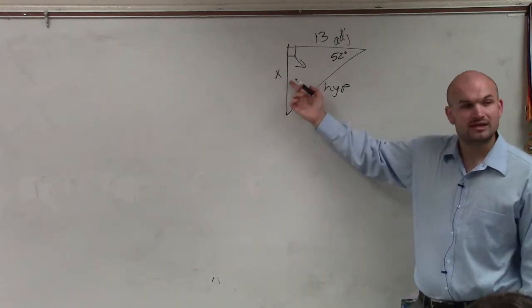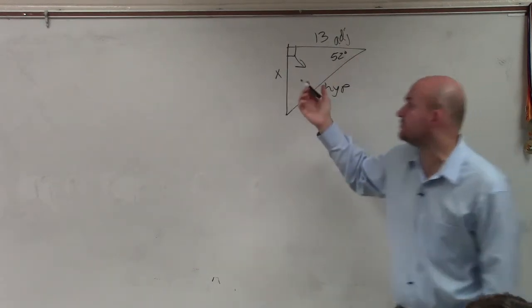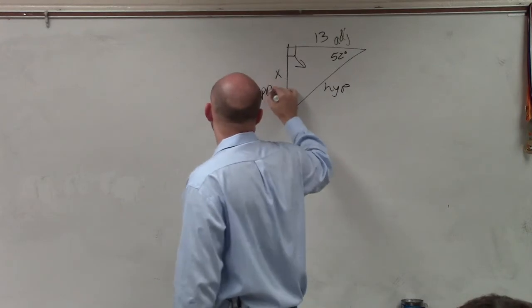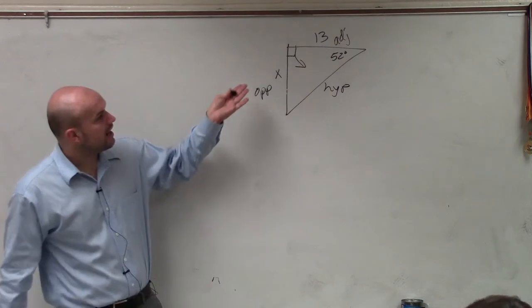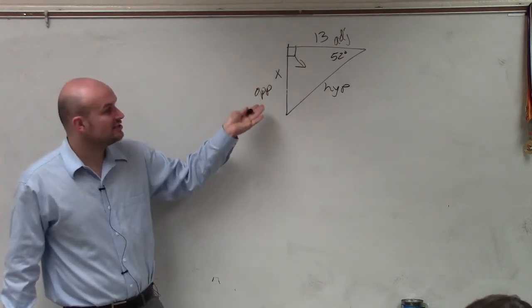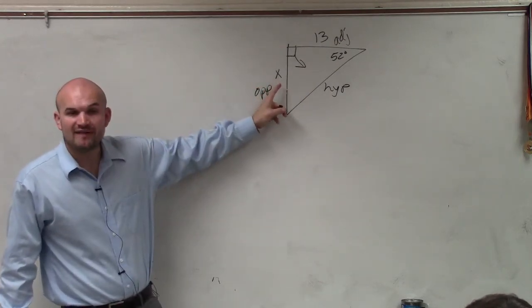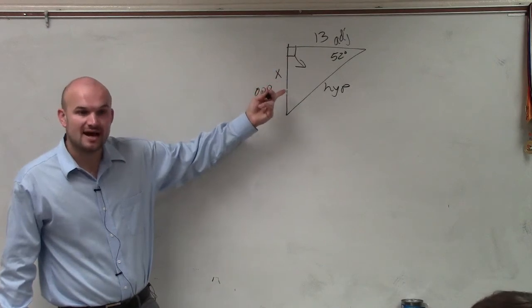Then the other side, which is directly opposite of your angle, is what we call the opposite side. Now, we're given a right triangle with an angle and an opposite and an adjacent side, and we're trying to find the value of that side.